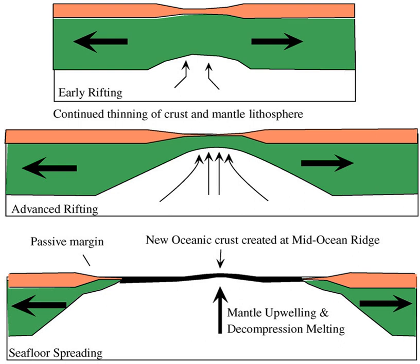Examples of non-volcanic margins include the Newfoundland margin, the Iberian margin, and the margins of the Labrador Sea — Labrador and Southwest Greenland. Passive margins with simple transitional crust show a simple progression from normal continental to normal oceanic crust. The passive margin offshore Texas is a good example.